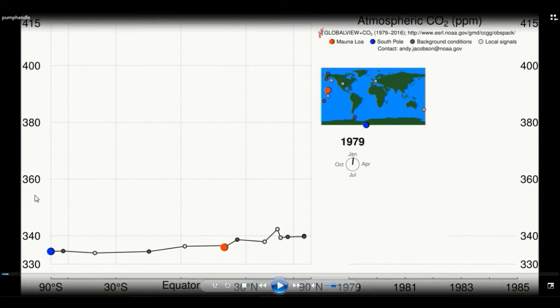Up the side here are concentrations of carbon dioxide in parts per million, represented by ppm. Here is a map of the Earth and each of these dots represents the locations of measurement sites where CO2 concentrations are measured.